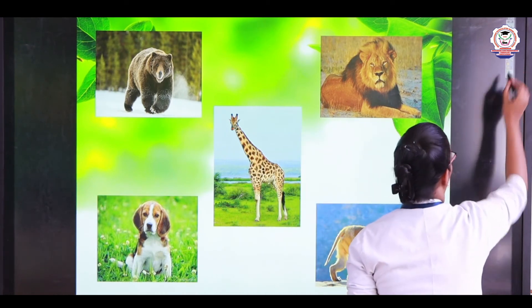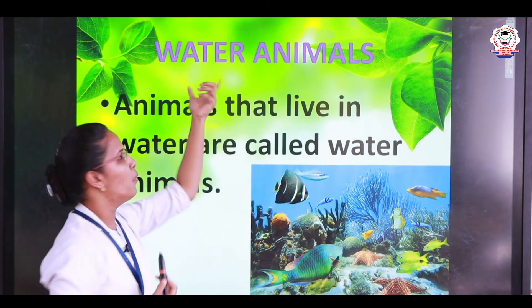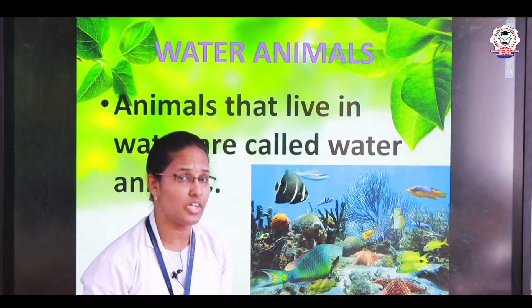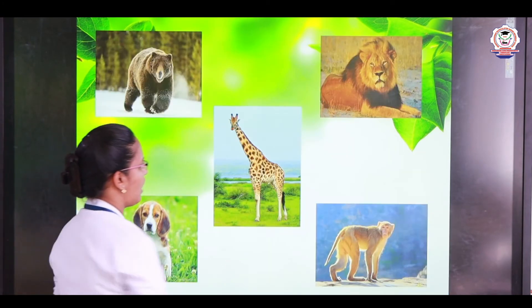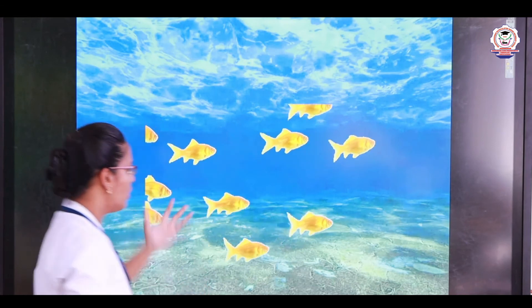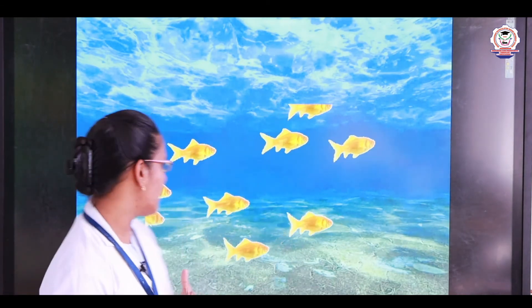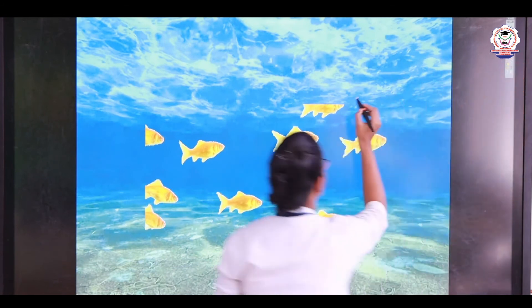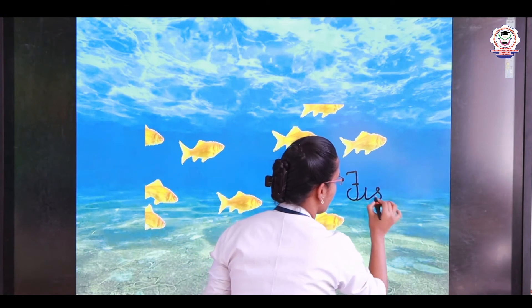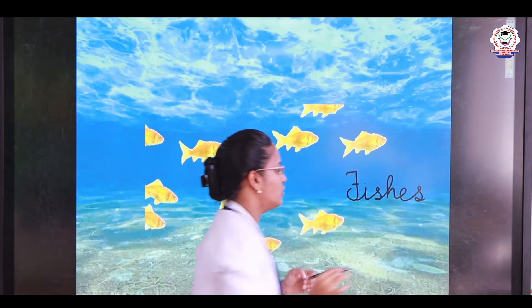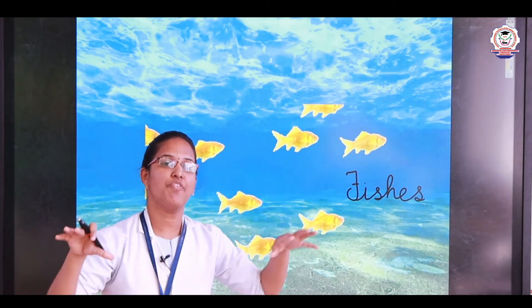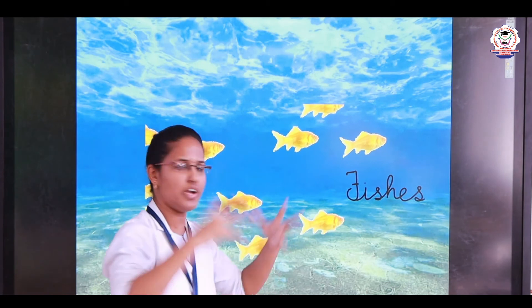Now we will see the next topic. What is the next type of animal children? Water animals. The animals that live in water are called water animals. Let's see some examples. What is this? They are fishes — F-I-S-H-E-S. Fishes breathe with the help of their gills. They have a pair of gills and fins to swim. We have different types of fishes in the sea, ocean, pond, and lake.